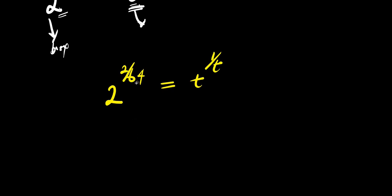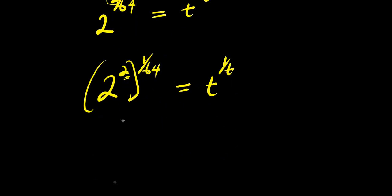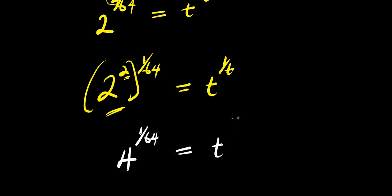Now there is 2 here, and 64 is 2 times 32. So what I can do is factor out this 2. I can have 2 to the power of 2, and this is raised to the power of 1 over 64, which equals t to the power of 1 over t. So we concentrate on what we have inside this bracket, which is 2 to the power of 2, and 2 to the power of 2 is 4. So I have 4 to the power of 1 over 64, equals t to the power of 1 over t.